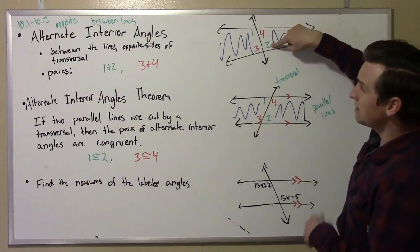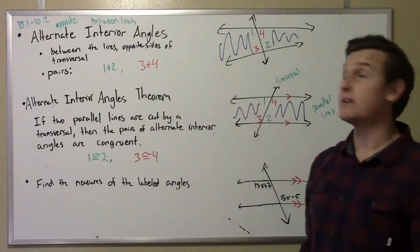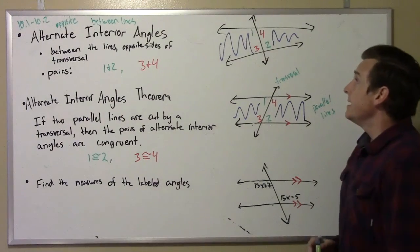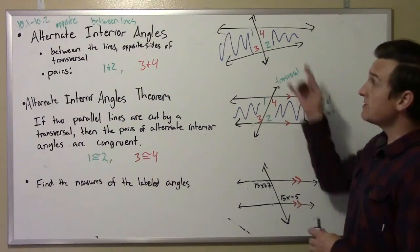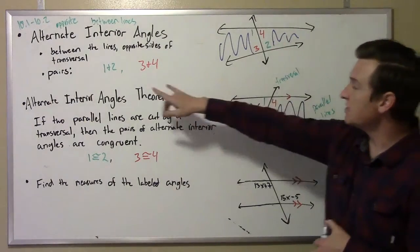One and two are alternate interior angles, and three and four are alternate interior angles as well. You don't have to have parallel lines to have alternate interior angles. I've just listed the pairs.